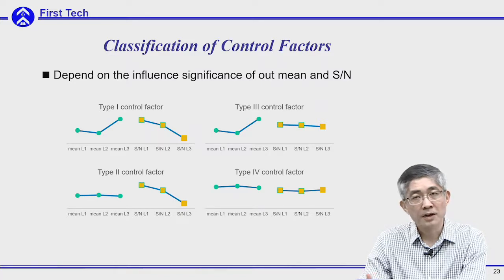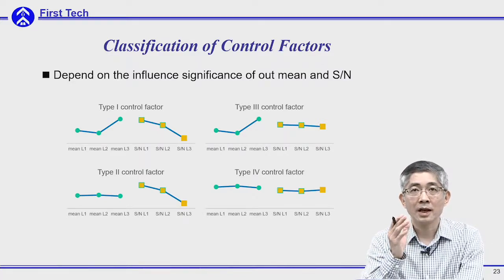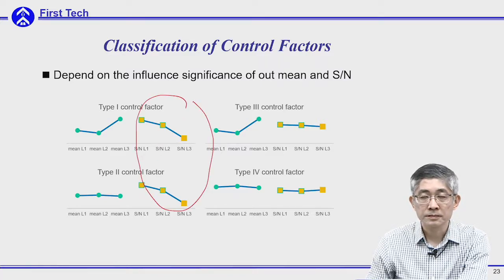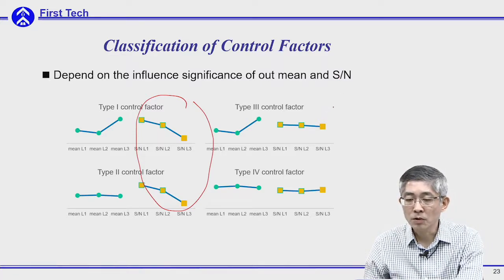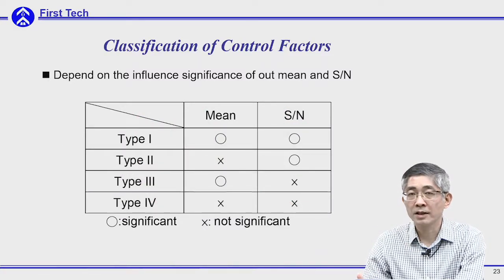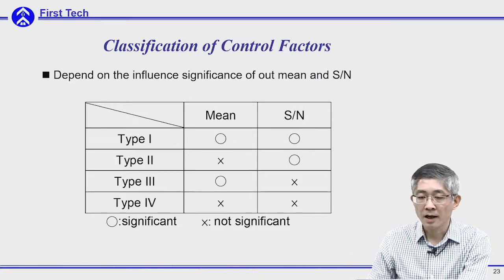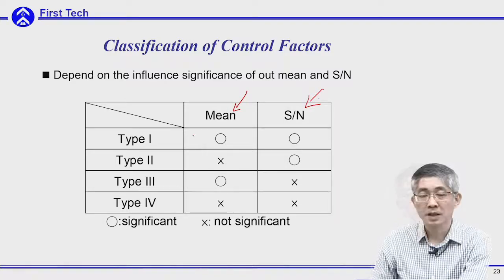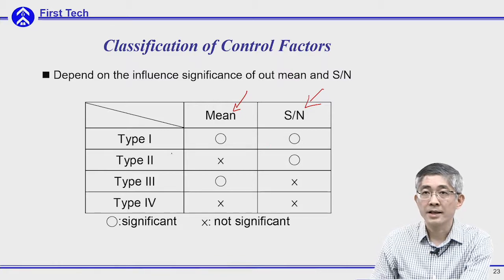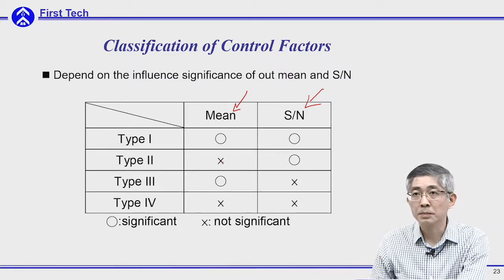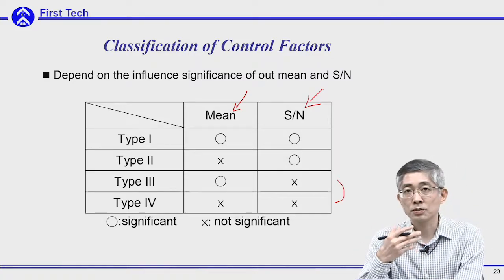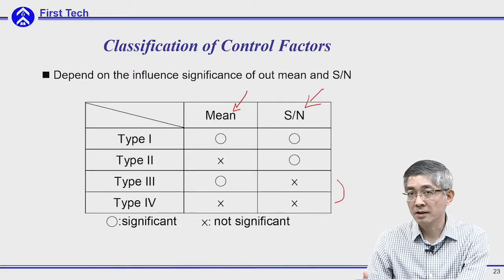Once you get the effect plot for the control factors, you will have two types of control factors. The first type has influence on the SN ratio, and the second type has no or insignificant influence on the SN ratio. We can classify the control factors into four types based on their influence on the mean output and the SN ratio. Type 1 has influence on both output mean and SN ratio. Type 2 has no influence on output mean but good influence on SN ratio. Types 3 and 4 have no influence on SN ratio, and are further classified based on their influence on mean output.